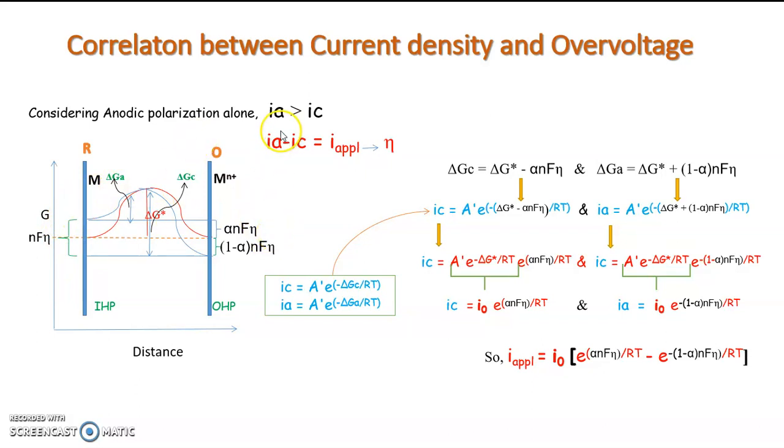Then, whenever we have Ia greater than Ic, we have a net current flow which is Ia minus Ic equal to the applied current, which is the overvoltage. It is surely Iη A. Don't get confused with Iη A - it is the anodic polarization. But as we are dealing with only this particular situation, I am taking it as Iη.